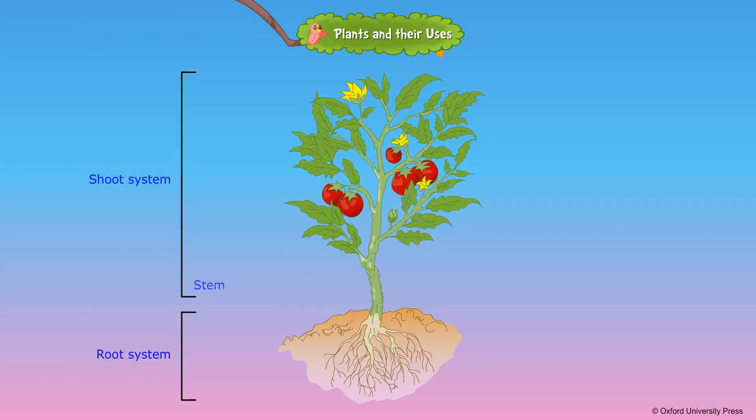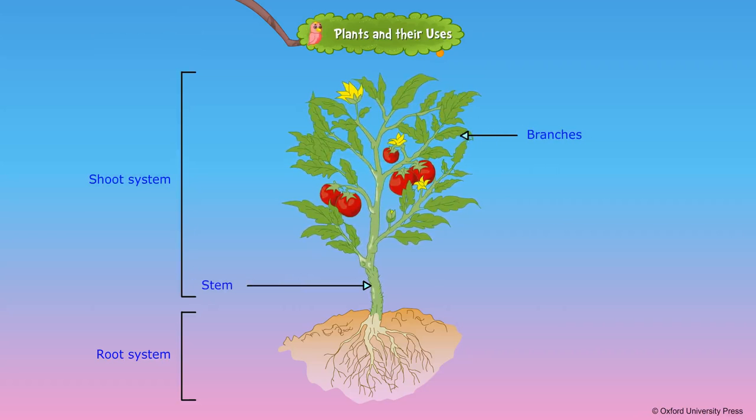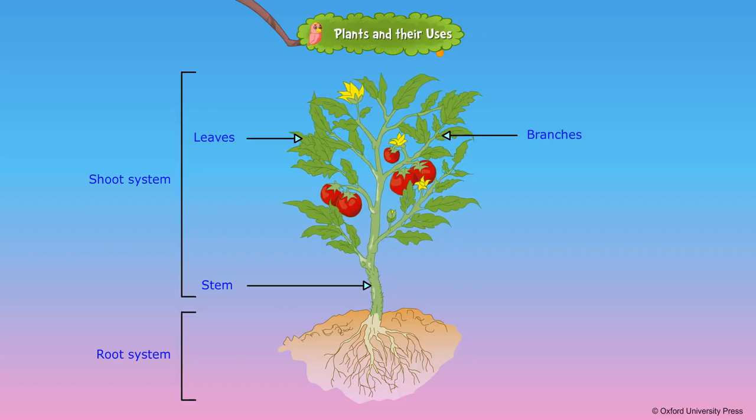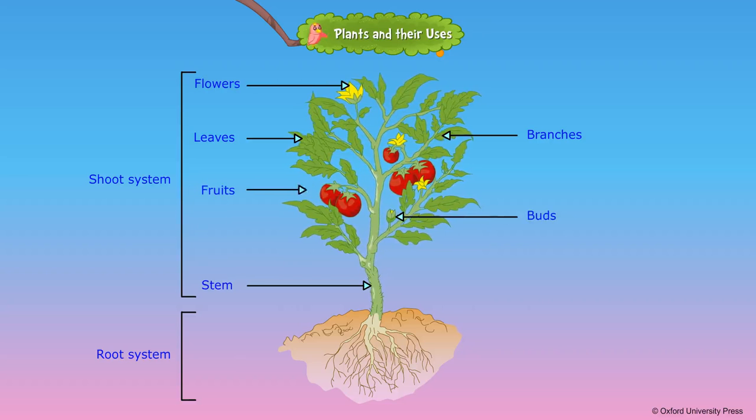The shoot system consists of stem, branches, leaves, buds, flowers, fruits and seeds.